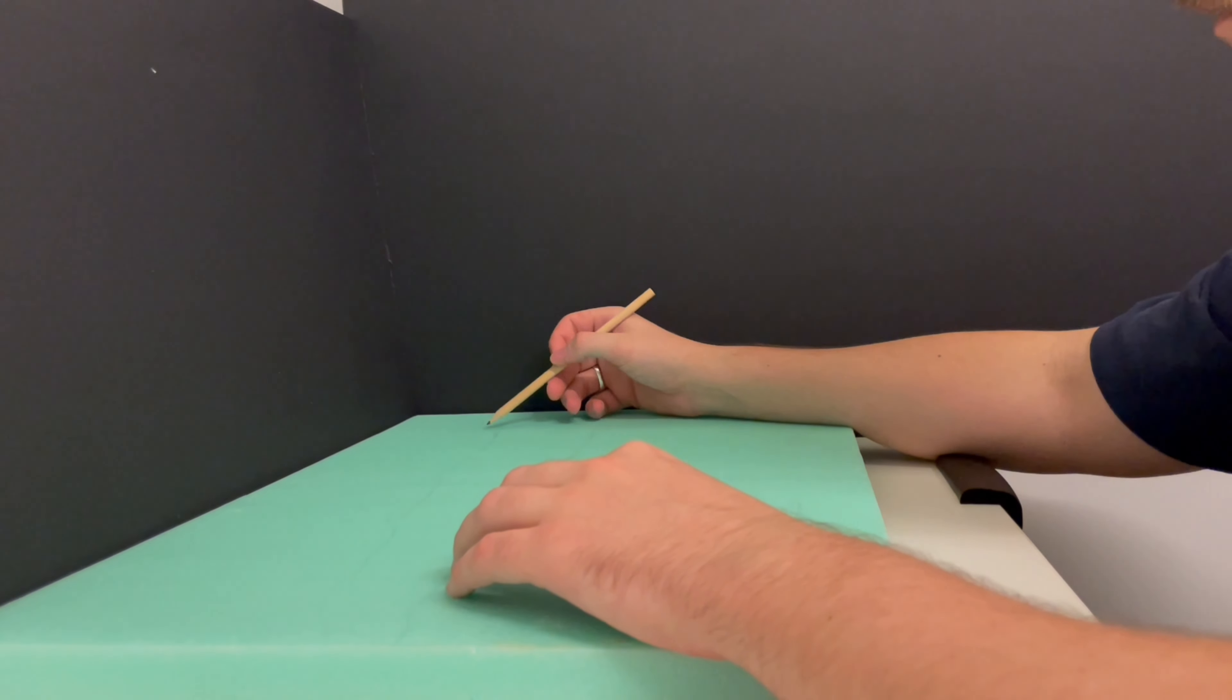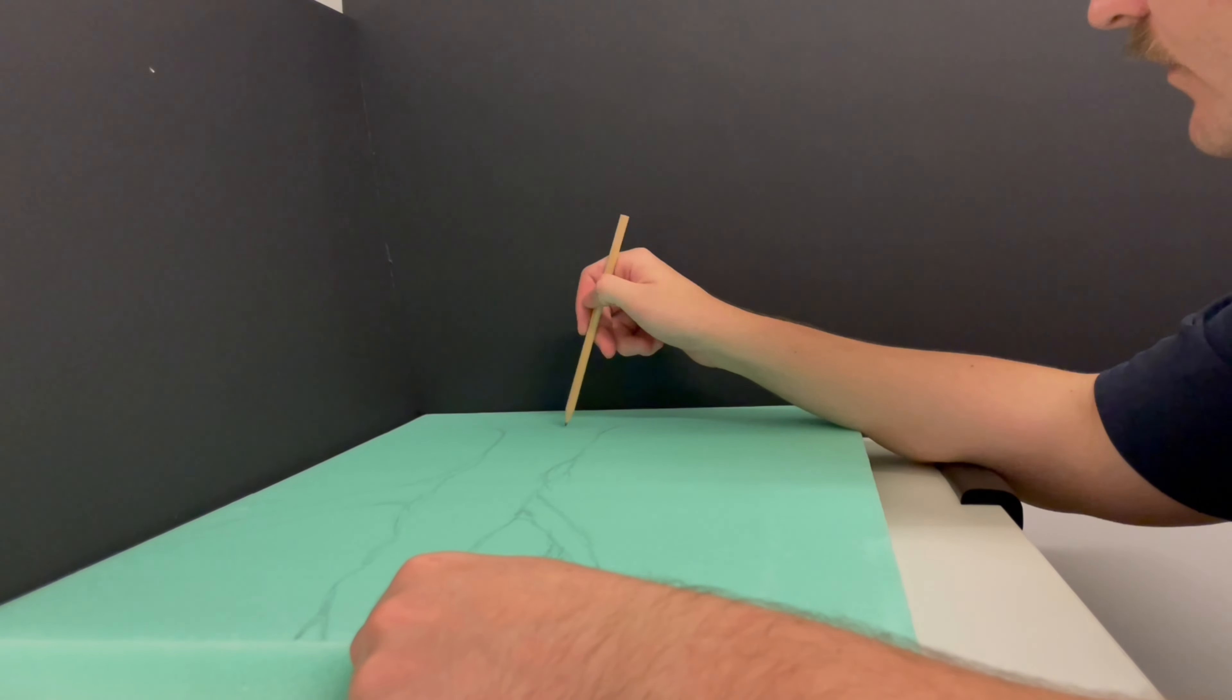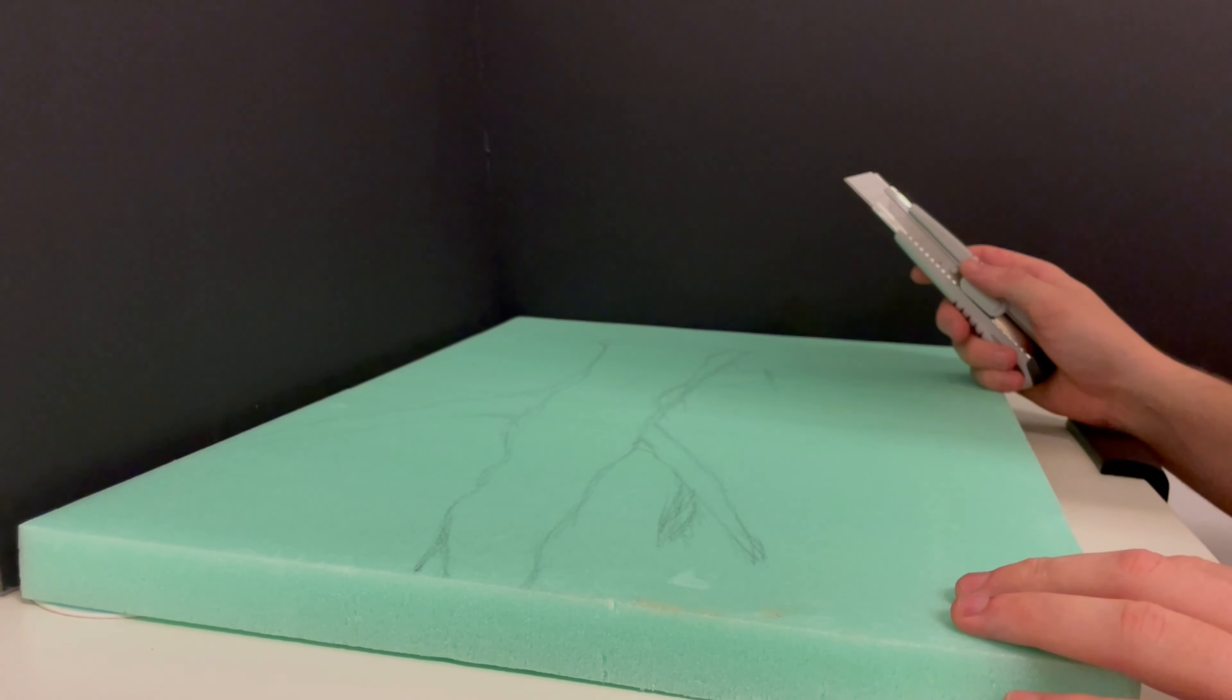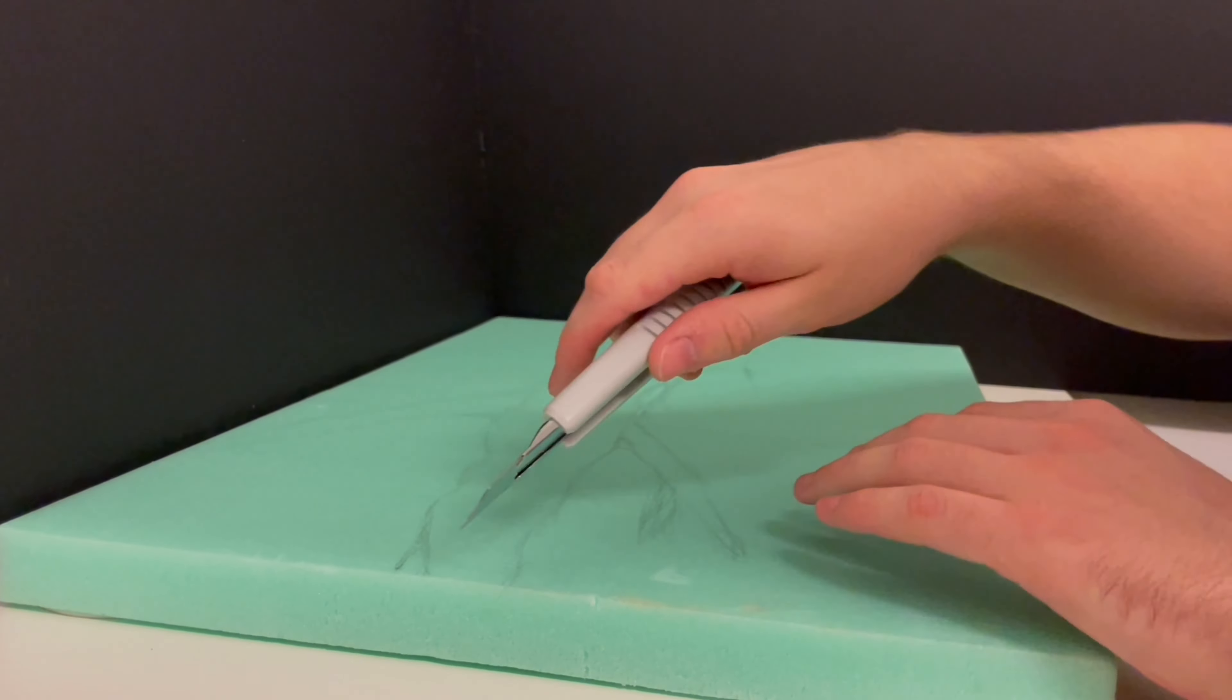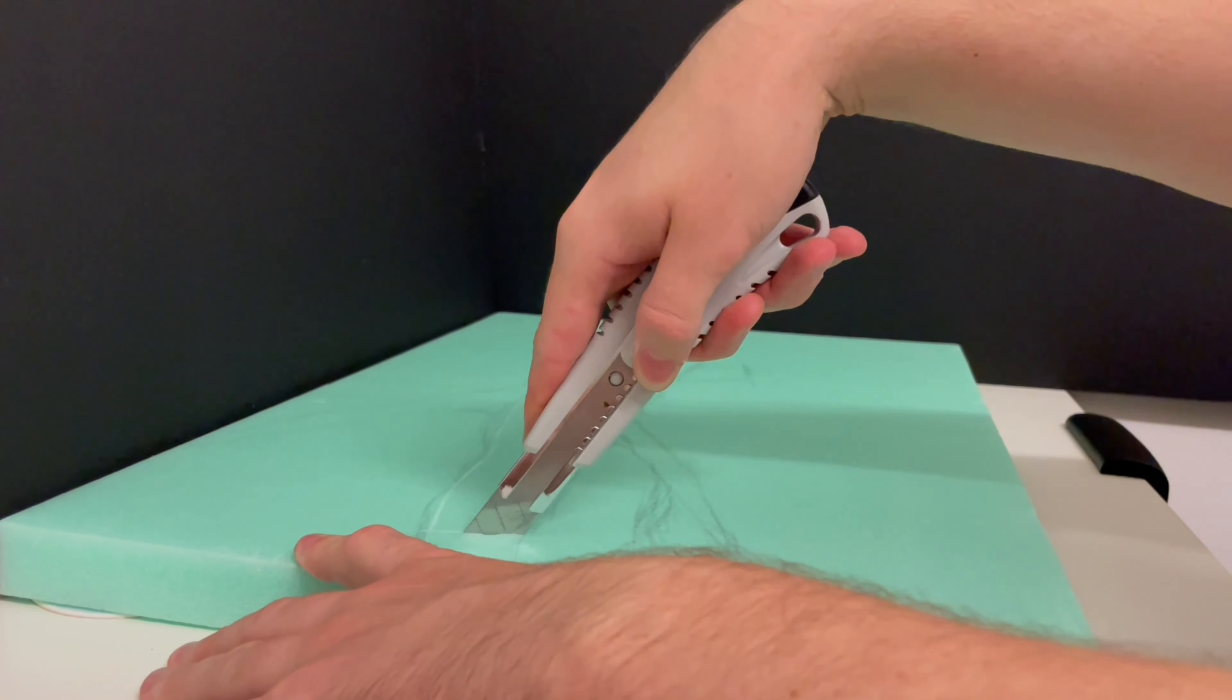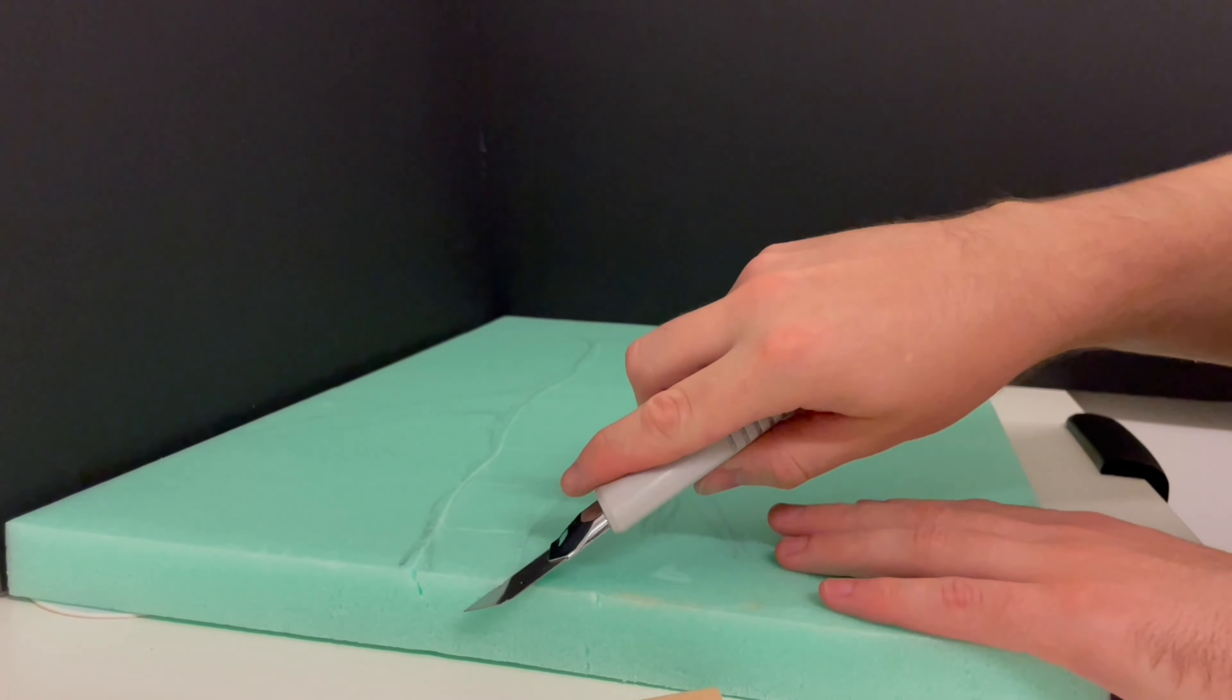Now this step doesn't have to be too accurate. It's just good to get a nice rough design going so you can see where you're going to place everything. Once that's sketched out, I use a blade to cut diagonally along the edges, and I find it's best to work in small areas to remove the foam.